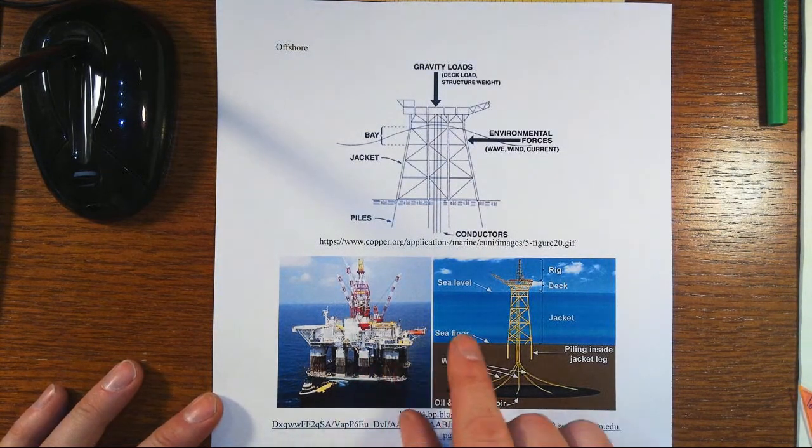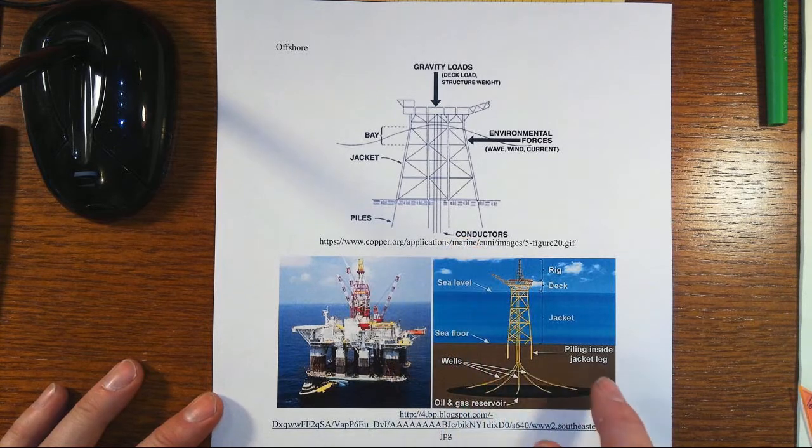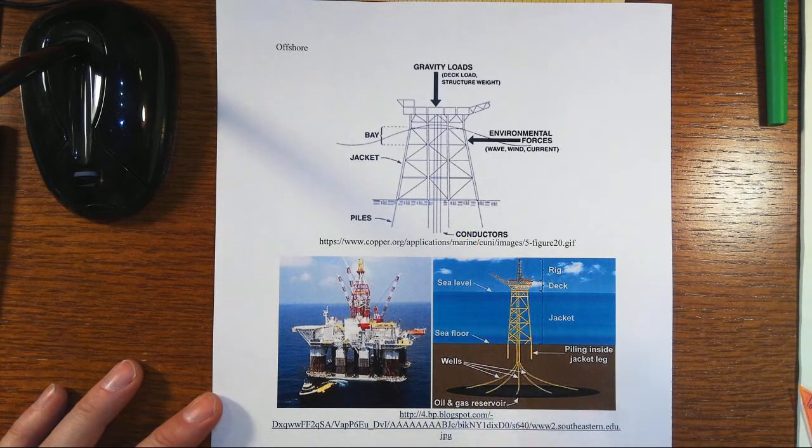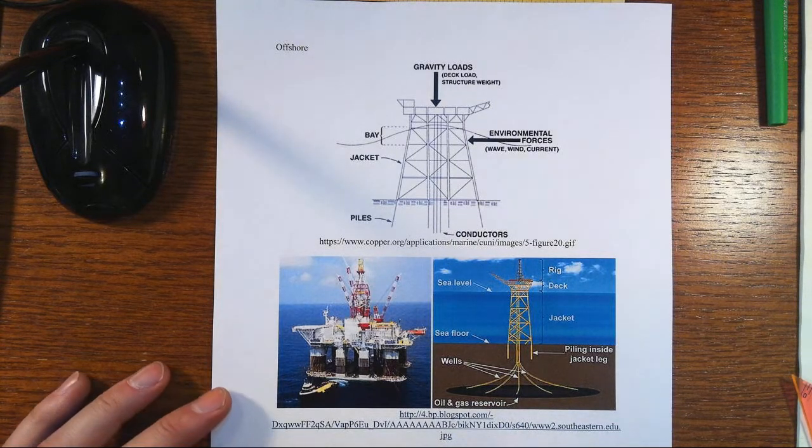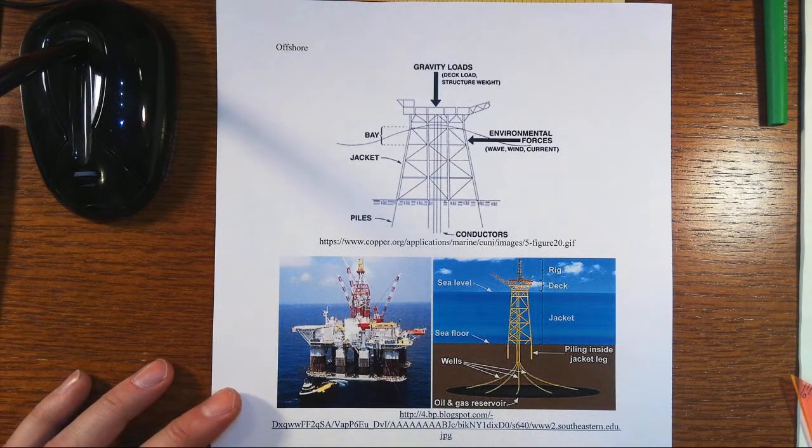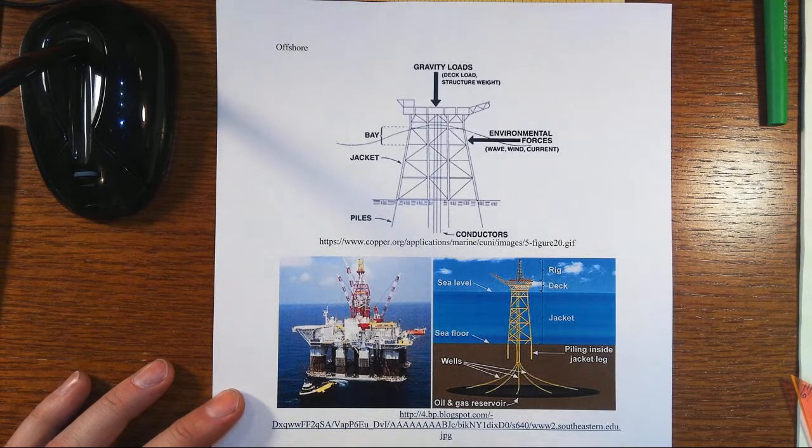This is actually a tension leg platform whereas the schematic is of a jacket platform, and down here in the lower right is also a jacket platform. All these situations represent relatively common situations where we have to deal with lateral loads.